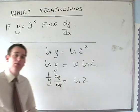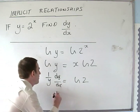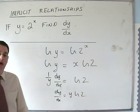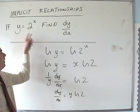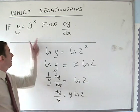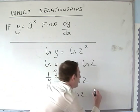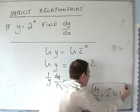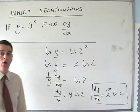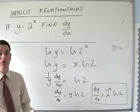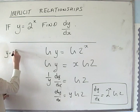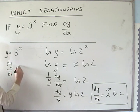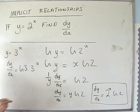We rearrange to get dy/dx by itself: multiply both sides by y to get dy/dx equals y times ln(2). Then remembering that y equals 2^x, we substitute back in, and end up with dy/dx equals 2^x times ln(2). This trick works for any exponential. In general, if y equals 3^x then dy/dx equals ln(3) times 3^x, and the same pattern applies for y equals 4^x.